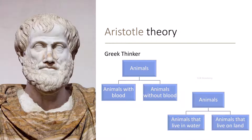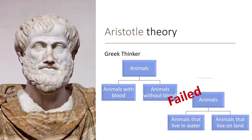In the same way, he grouped the animals that live on water and the animals that live on land. This led to a lot of confusion as lots of similar types of animals were not grouped together. Therefore, the system failed.